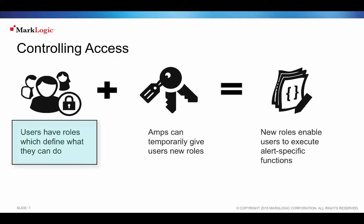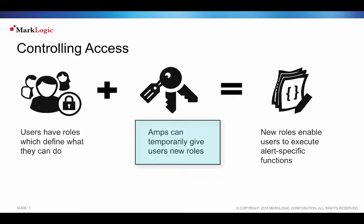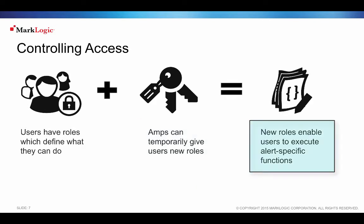Alerting applications typically allow individual users to create their own rules for what and when they would like to be alerted, so there are inherent security requirements. Temporary permissions to call certain functions, called AMPs, give users alerting functionality without exposing the functions directly. By providing the needed privileges only in the context of the alerting application, users can run queries they might not be privileged to run in a controlled way.